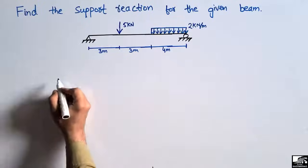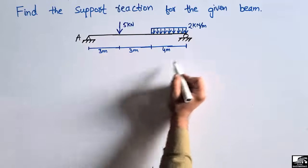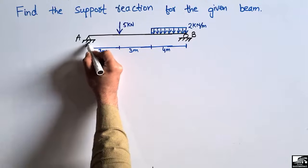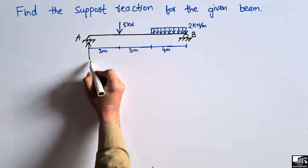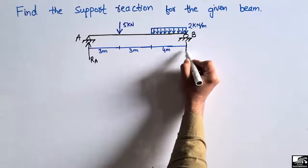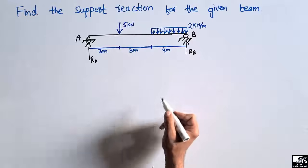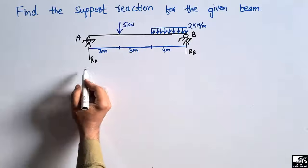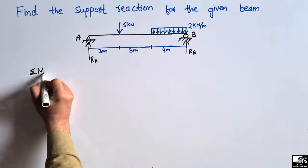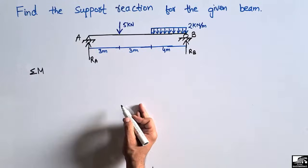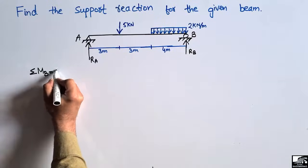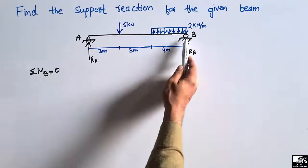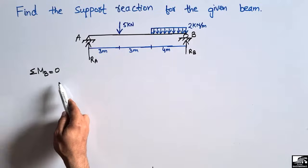To find the support reactions, let's call this support A and this roller support B. Support A provides reaction RA and support B provides reaction RB in the upward direction. Since there is no horizontal load, we do not consider any horizontal reaction at the hinge support. We will use the summation of moments at point B equal to zero, taking all moments about point B and setting their sum to zero.